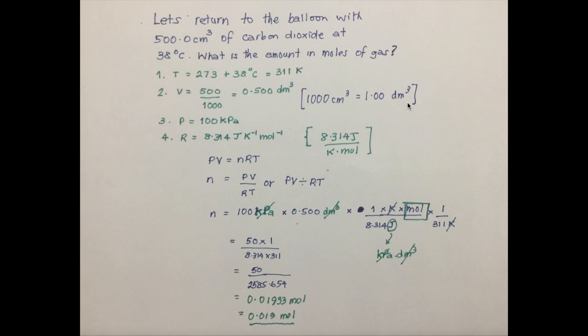And of course, one dm³ also equals one liter. Doing that conversion, we get 0.500 dm³. And pressure is 100 kilopascals. Standard pressure might be given as slightly over 100 in other sources, but in the IB data booklet, it's given as 100 kilopascals.